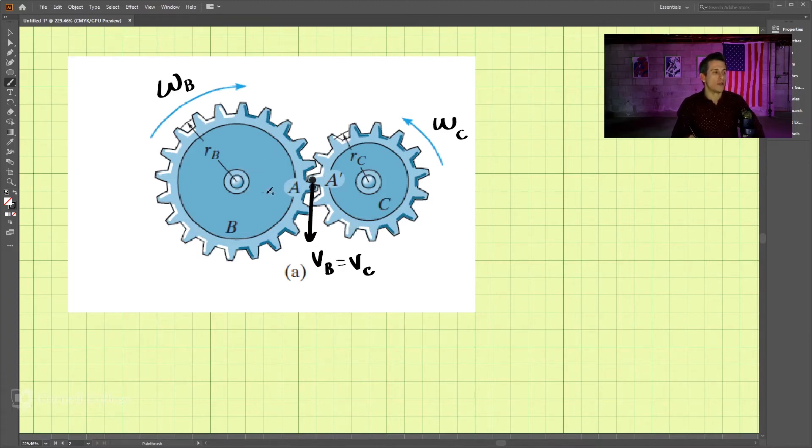So how do we solve this? We know that the velocity of B here is omega B times RB, and the velocity of C is omega C times RC.